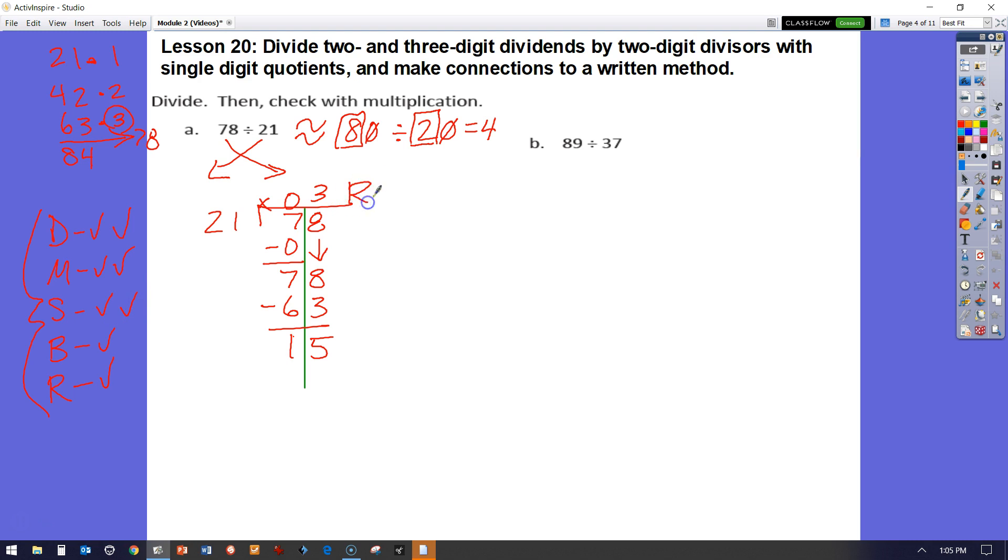We're going to have 3 with a remainder of 15. So if I had 78 dollars and I decided to divide that evenly by 21 students, every student would get $3 to bring me to a total of 63 dollars given out, and I would have 15 dollars remaining.